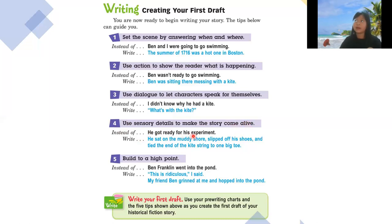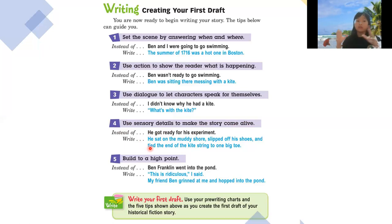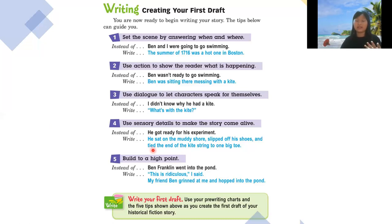Tip four: use sensory details to make the story come alive. Instead of writing 'he brushed his hair,' you can use more adjectives and stronger verbs to make a longer, more meaningful sentence. For example: 'He grabbed the orange brush and swept it through his wavy hair.' Adding adjectives makes the sentence more vivid and meaningful.